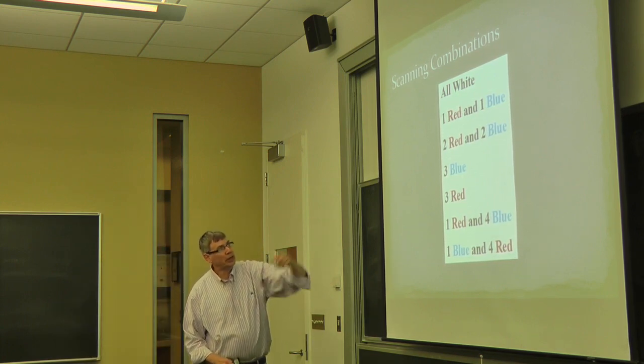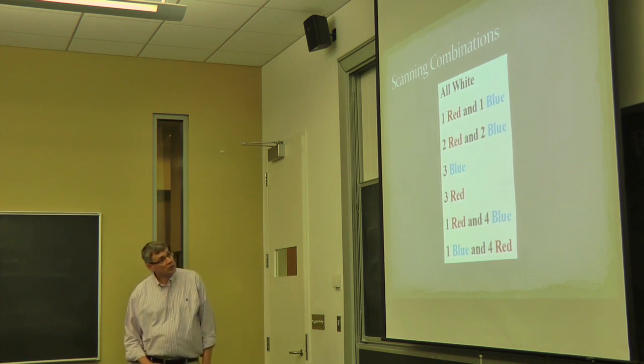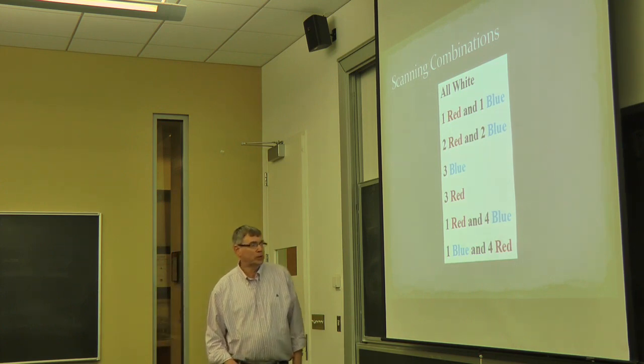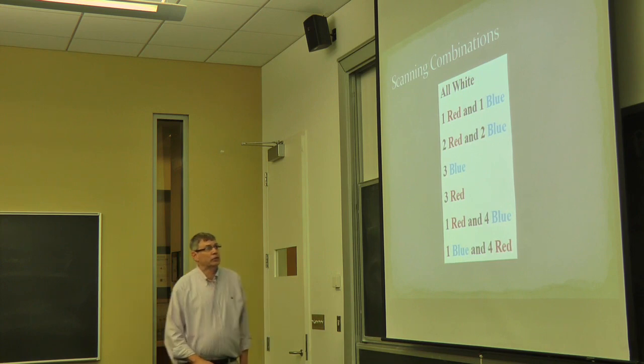All white is divisible by three. One red, one blue, and three white. Two red, two blue, and a white. Three blue, and two white. Three red, and two white. One red, four blue, and a white. One blue, and four red, and a white. And that's what they look for in the machine.